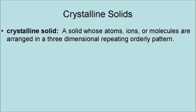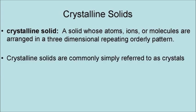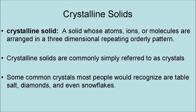A crystalline solid is a solid whose atoms, ions, and molecules are arranged in a three-dimensional repeating orderly pattern. Crystalline solids are commonly simply referred to as crystals. Some common crystals most people would recognize are table salt, diamonds, and even snowflakes.